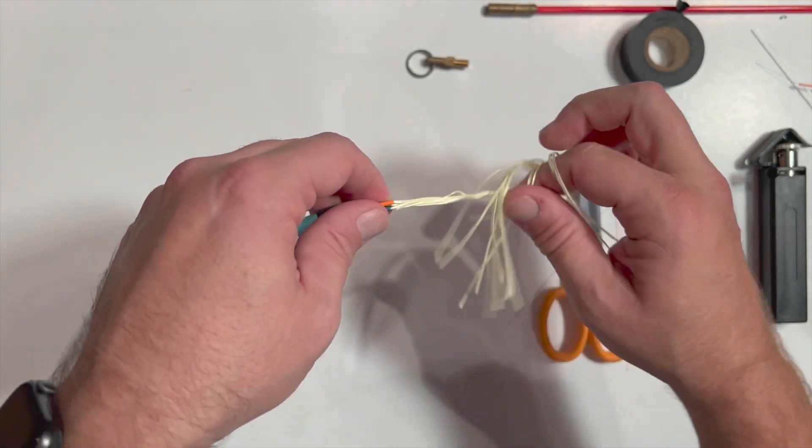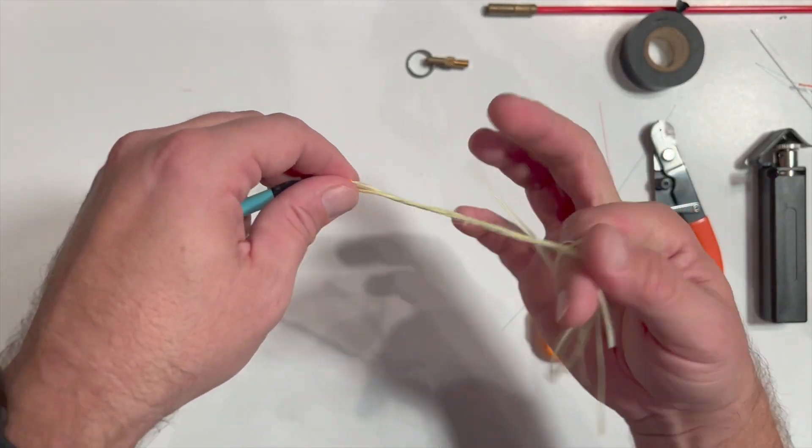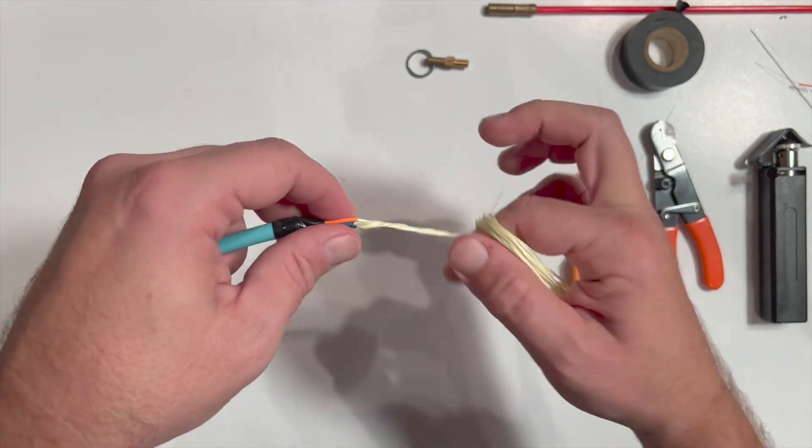Take the Kevlar strengthening yarns from each individual subunit and twist them together to make a single pull cord.